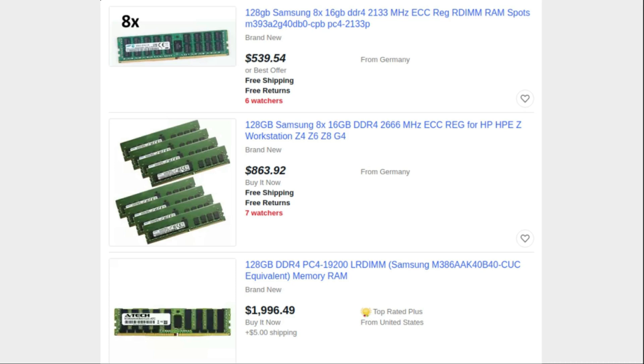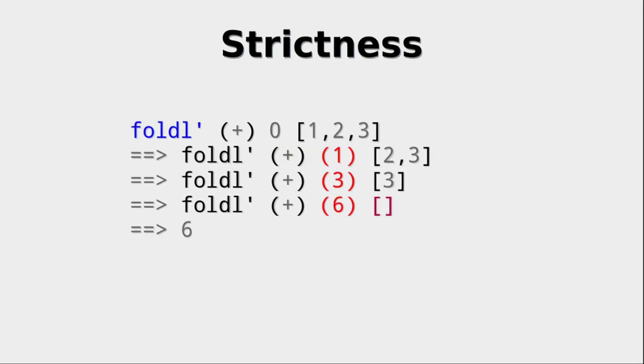But then the question is, can we do better? And we can. There is a function called foldL prime. It's in the data.list module. So what does it do differently?